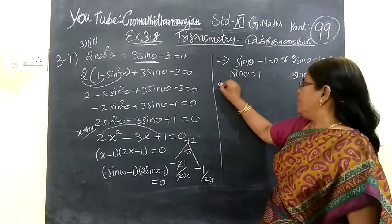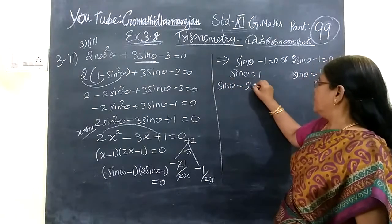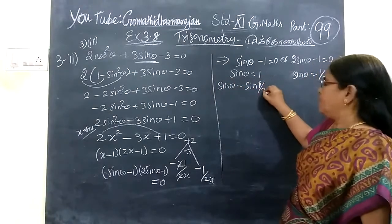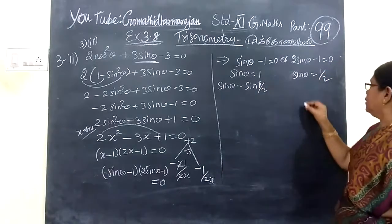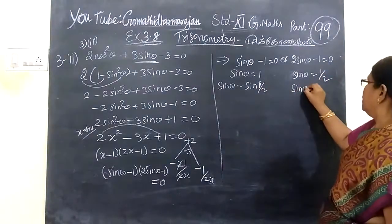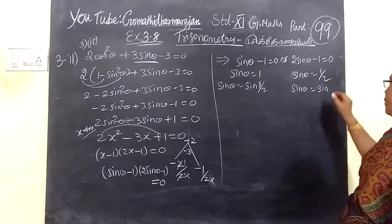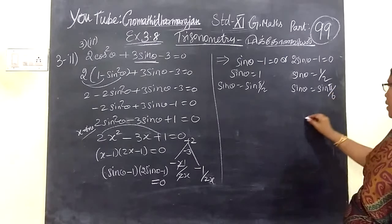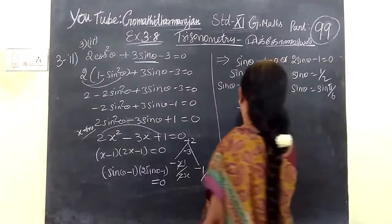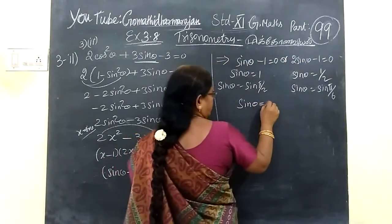Sin theta equal to 1, you can write sin theta minus 1. Here sin theta is 1. And sin theta equal to 0 means sin theta minus 3, 30 degree, 30 degree is negative. Sin theta minus 3, so sin theta minus 1.